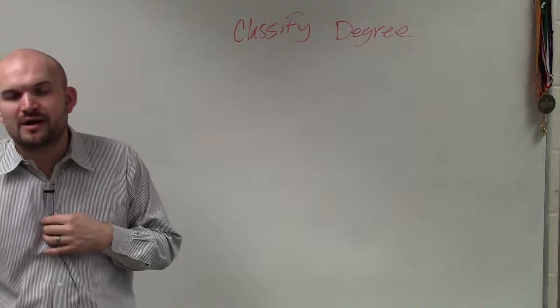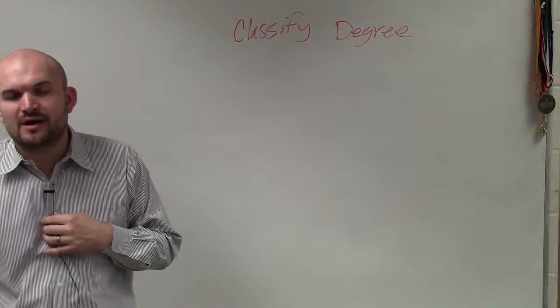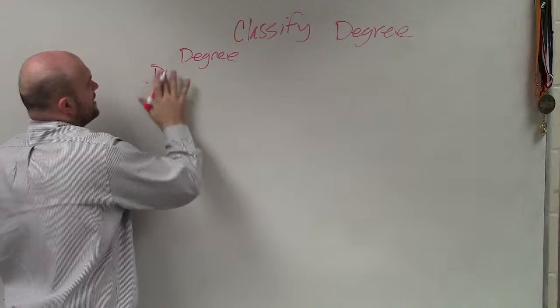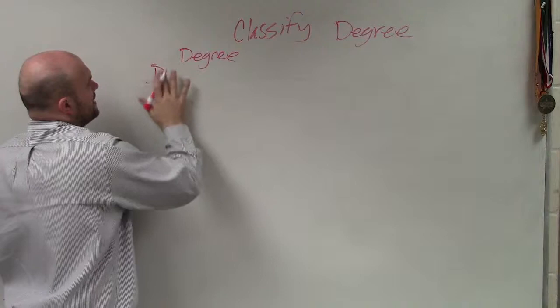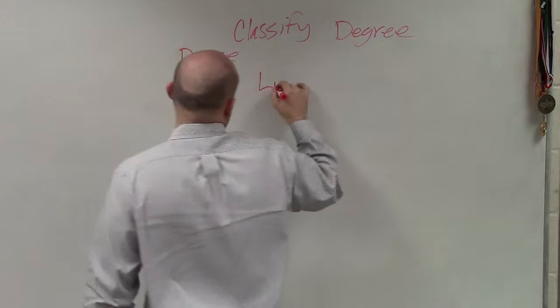now the last thing you're going to have to do is order or make sure that you can classify what type of polynomial that you have based on the degree. So the first one is if your degree is equal to 1, then it's what we call linear.